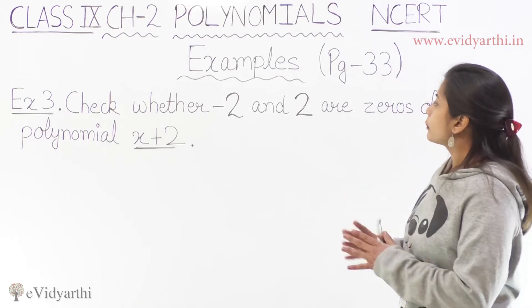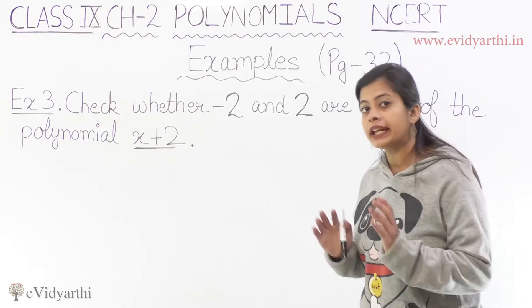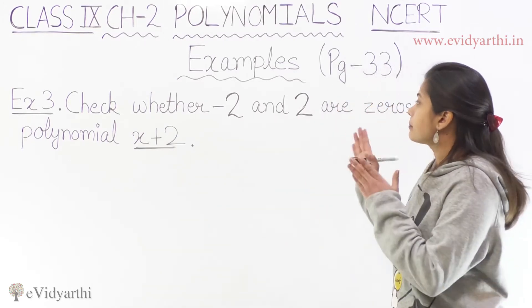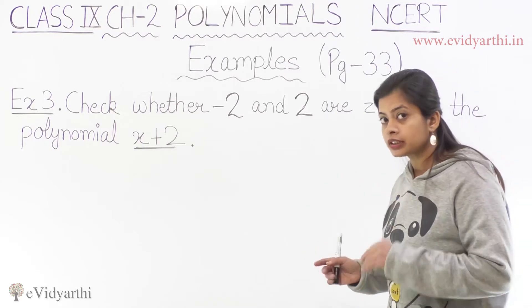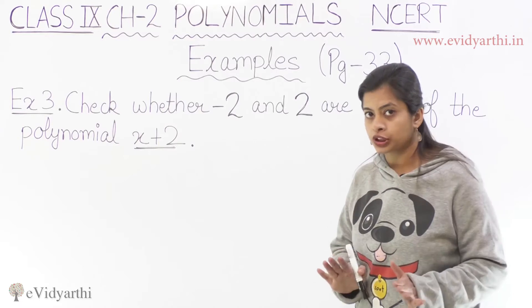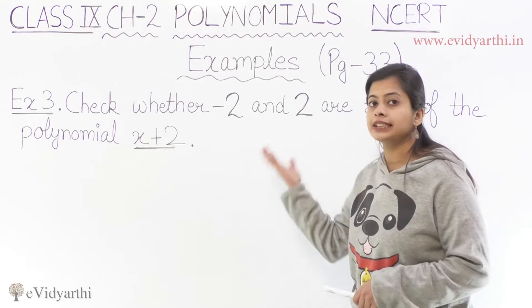What is the question? Check whether minus 2 and 2 are zeros of the polynomial x plus 2. So here we have a polynomial. Now we need to check if minus 2 and 2 are zeros. So what are zeros? We are asking about roots. Do we satisfy this polynomial? Do we have a solution?